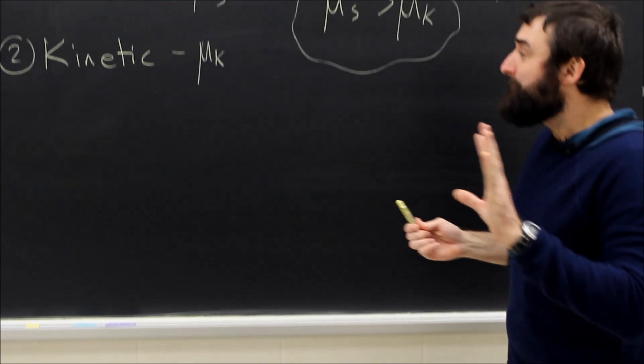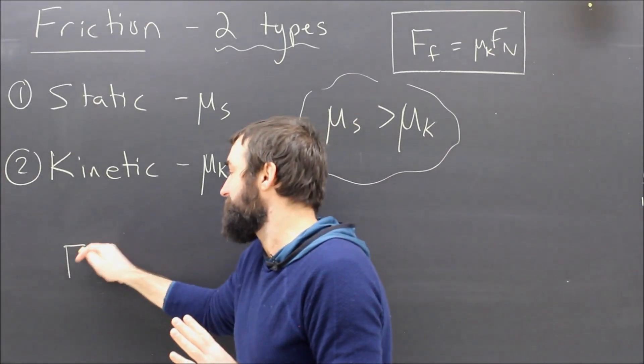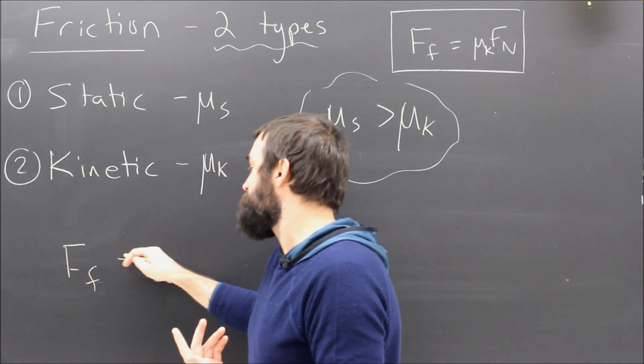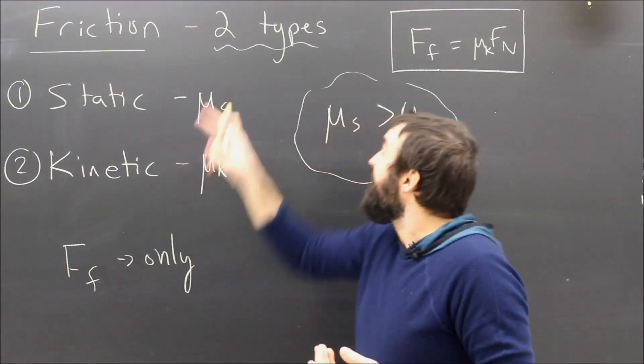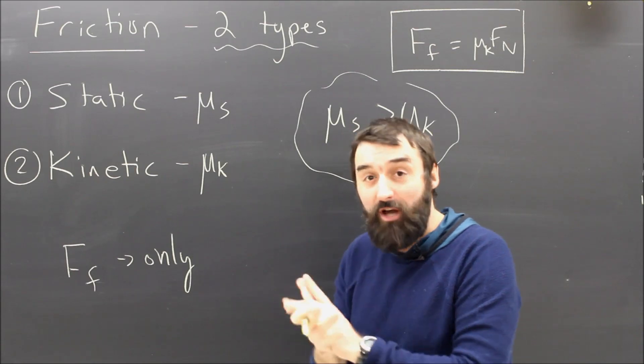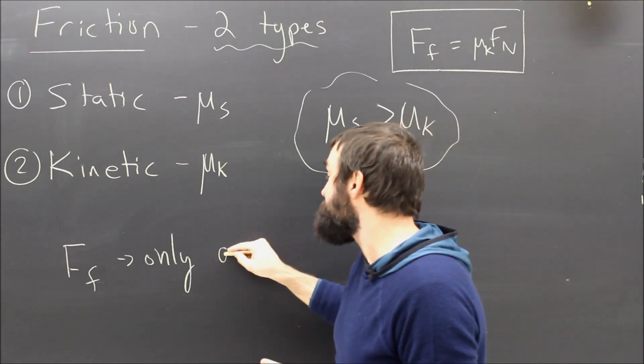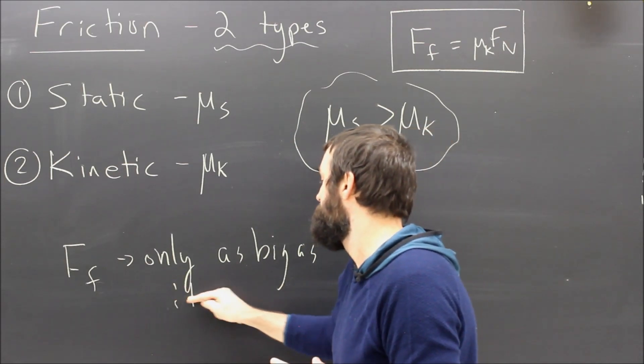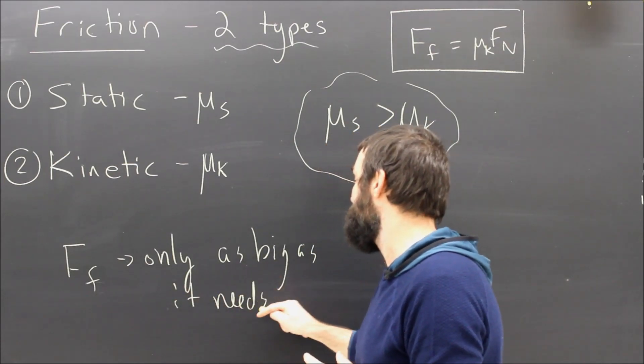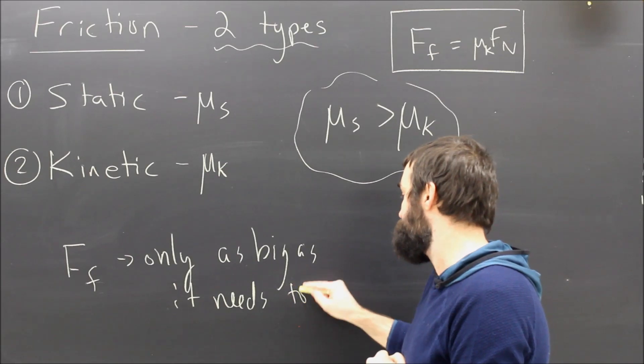What's going on is the simple fact that you need to remember that friction, specifically static friction, is only going to be as big as it needs to be. It's reactive, right? It hates slippage, it wants to stop things from sliding. It's only as big as it needs to be. And so how does that affect our formula? Only as big as it needs to be.